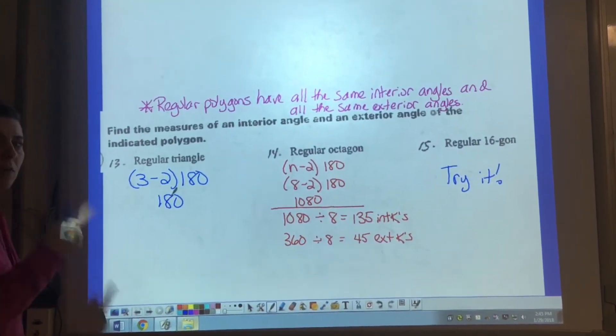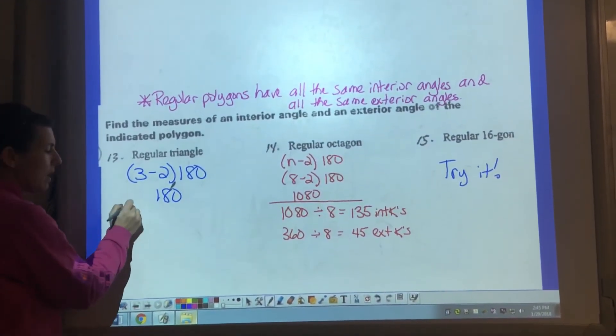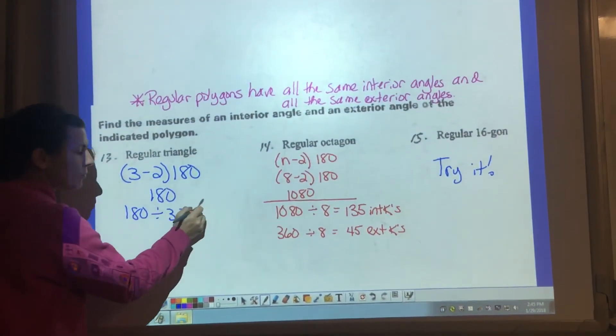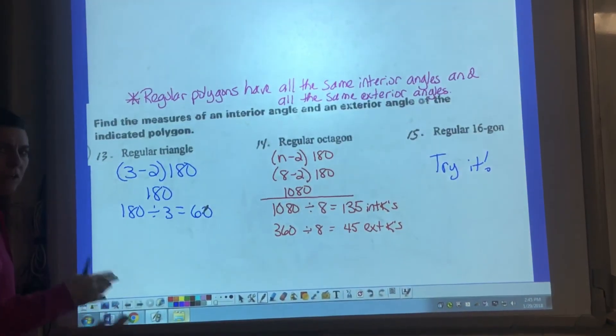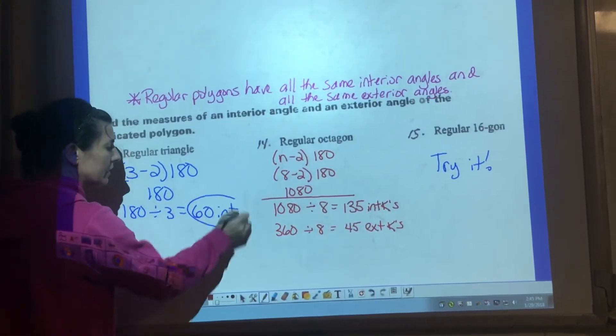We know that the sum of all those angles inside is 180. Since they are all the same, I can divide by 3 to figure out each interior angle. So interior angles are each 60.